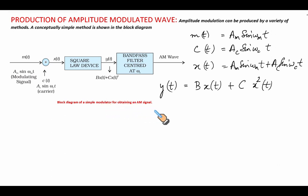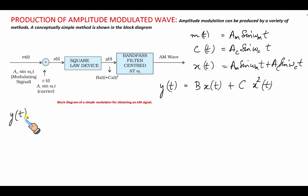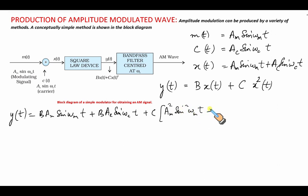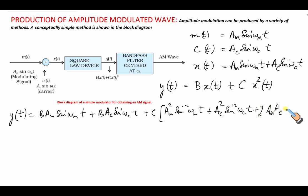Now let us solve for y(t). y(t) comes out to be: b·Am·sin(ωm·t) + b·Ac·sin(ωc·t) + c·Am²·sin²(ωm·t) + c·Ac²·sin²(ωc·t) + 2c·Am·Ac·sin(ωm·t)·sin(ωc·t).